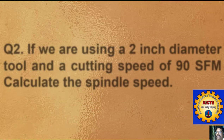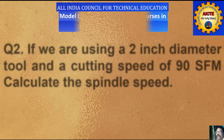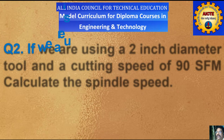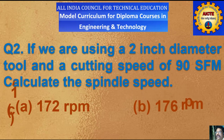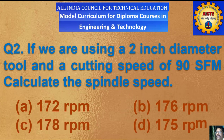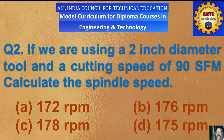Question number 2: if we are using a 2 inch diameter tool and a cutting speed of 90 SFM, calculate the spindle speed. A) 172 rpm, B) 176 rpm, C) 178 rpm, D) 175 rpm.